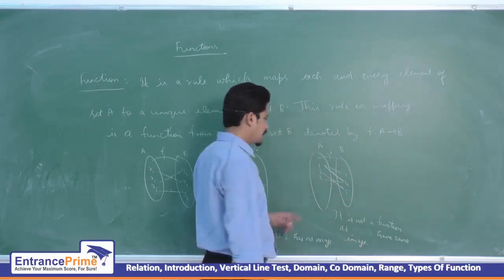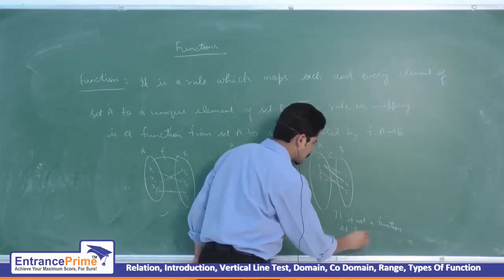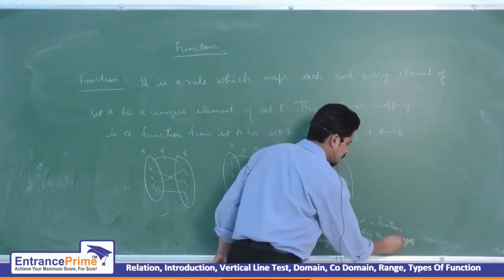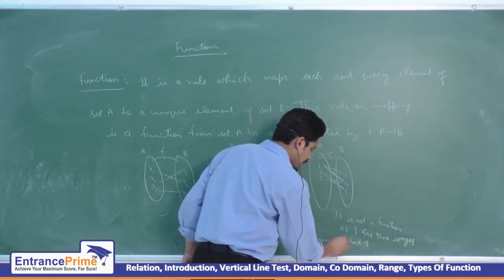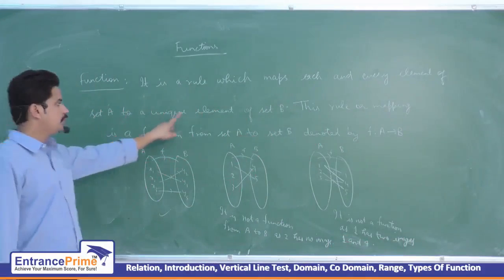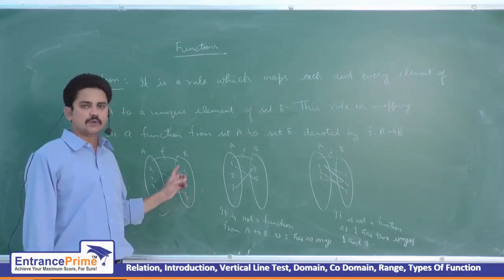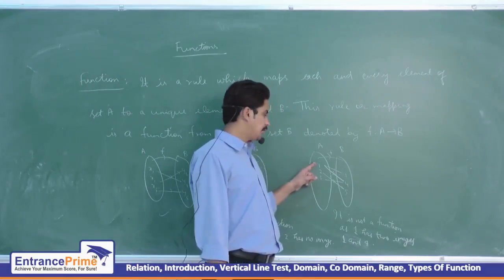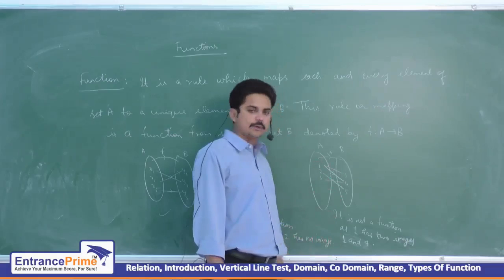Now this is not a function, as element one has two images — that is one and four. The definition says that a function is a rule which maps each and every element of set A to a unique element of set B. This means each element of set A must have an image, and the image must be unique. Since element one has two images, it does not have a unique image, and therefore it cannot be a function.